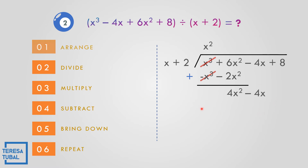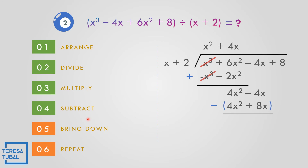Divide again: 4x squared divided by x is positive 4x. Multiply: 4x times x is 4x squared, and 4x times 2 is positive 8x. Subtract — distribute the negative: negative 4x squared and negative 8x, proceed to addition. 4 minus 4 cancels to 0. Negative 4 minus 8: add and copy the big sign, so that becomes negative 12x. Bring down positive 8.